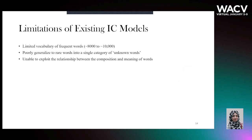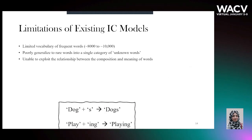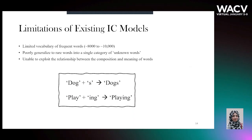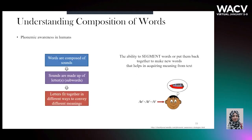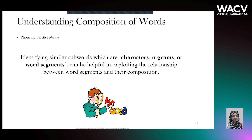Existing captioning systems model words as atomic units in captions and are unable to exploit the structured information in words. This makes representation of rare words very difficult and out-of-vocabulary words impossible. To mitigate some limitations of the existing models, we draw inspiration from humans in terms of how they develop linguistic understanding. The ability to decompose words or put them back together to make new words is one of the foundational skills that helps in acquiring meaning from text.